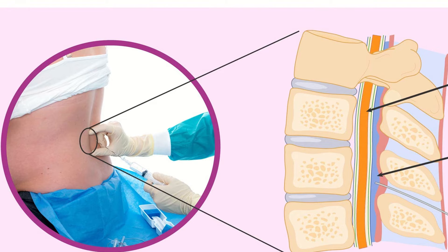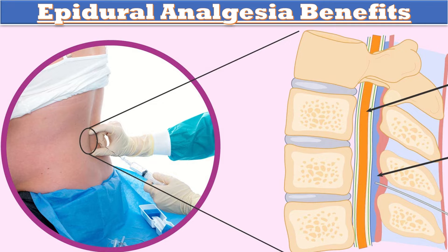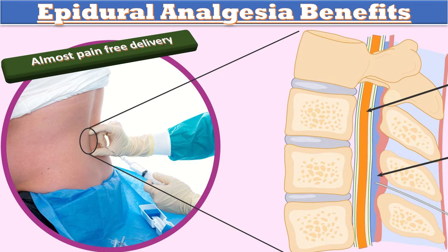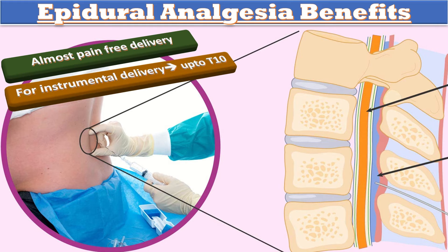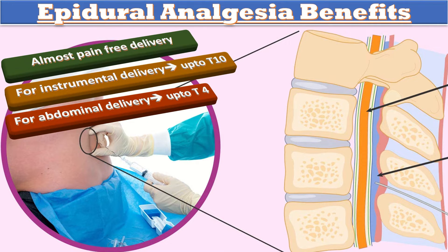The benefits of epidural analgesia include almost pain-free delivery. For instrumental delivery, top-up can be tailored for sensory blockade of the sensory dermatome up to T10 while motor power of abdominal muscles is retained, allowing bearing down with contractions. For abdominal delivery, top-up can provide abdominal muscle relaxation and sensory blockade up to T4 level.